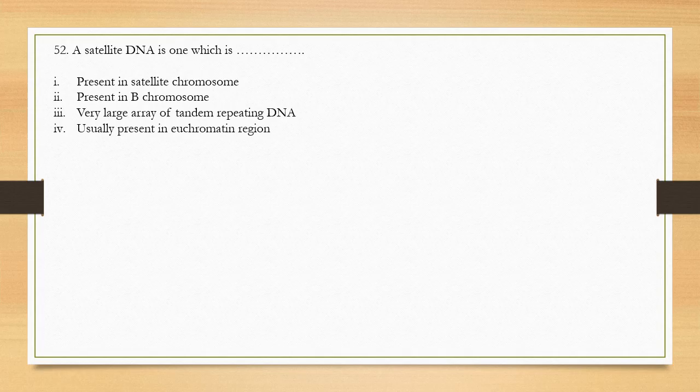That is why we are talking about bipolar development and our answer is embryogenesis. Question number 52: Satellite DNA is one which is — option 1: present in satellite chromosome, option 2: present in B chromosome, option 3: very large array of tandem repeating DNA, option 4: usually present in euchromatin region. Satellite DNA is the non-coding part of DNA, and option 3 is correct — it is a very large array of tandem repeating DNA with short fragments that repeat themselves.